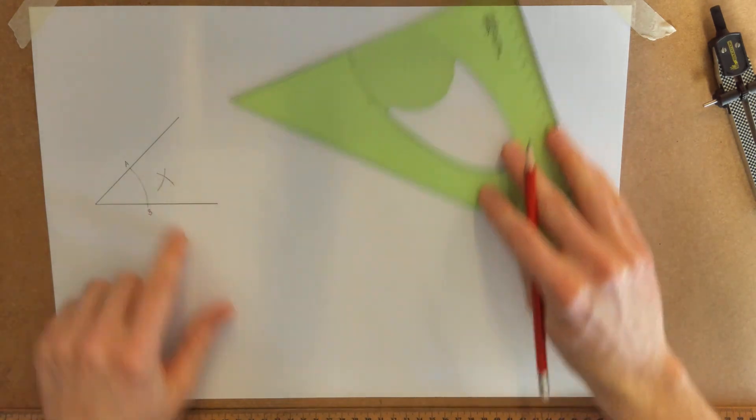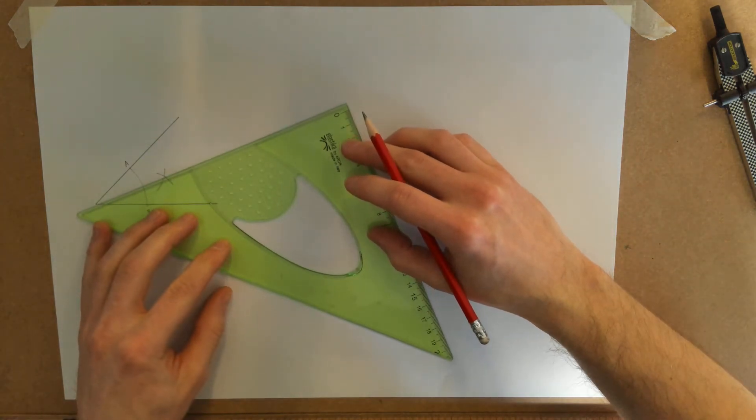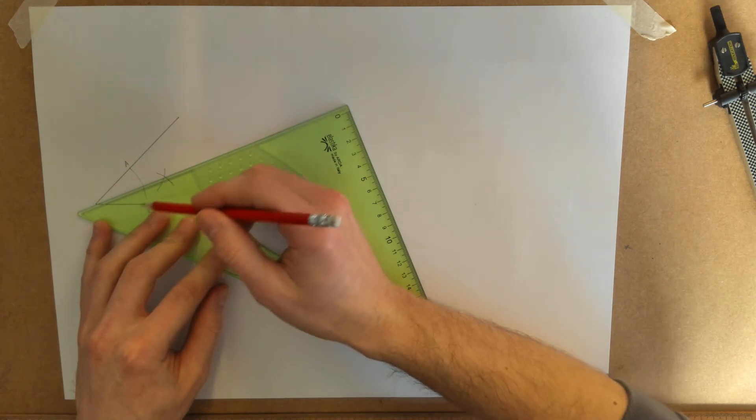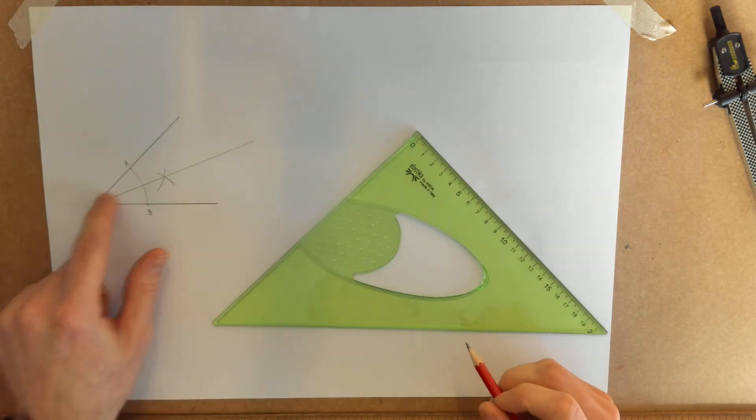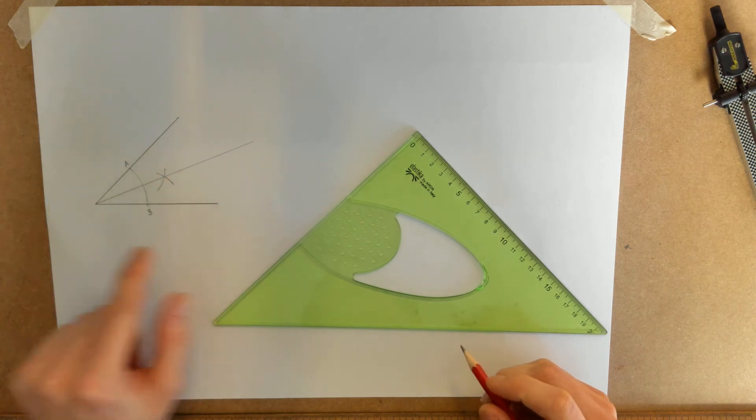Where the two arcs intersect, join a line from the apex of the angle, the vertex of the angle. Draw a line straight out through that point. And that is how you bisect an angle.